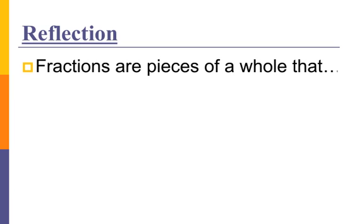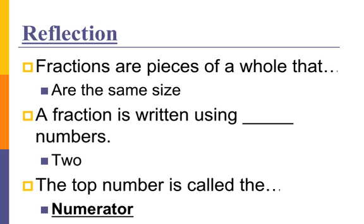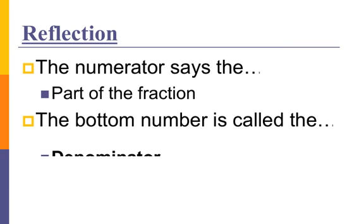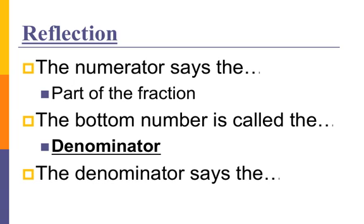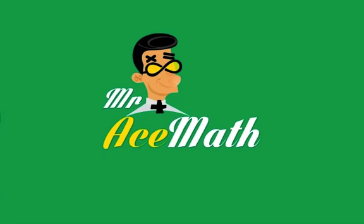So let's review this lesson. Fractions are pieces of a whole that are the same size — remember, that's the most important part. A fraction is written using two numbers. The top number is called the numerator, and the numerator says the part of the fraction. The bottom number is called the denominator, and the denominator says the number of pieces in the whole. Thanks for using Mr. Ace Math. Don't just pass math — ace it.